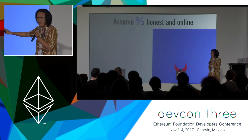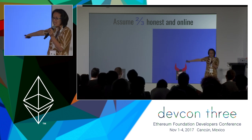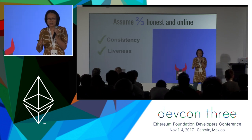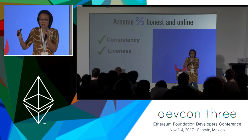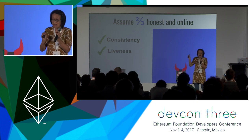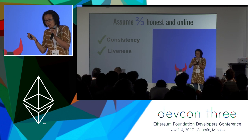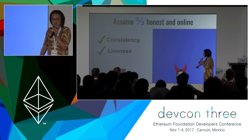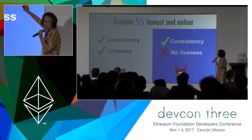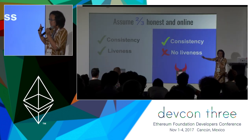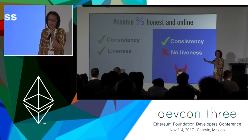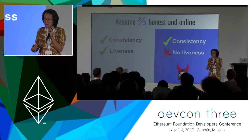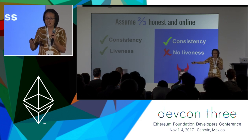Let's consider two possible worlds: on the left, Vitalik is honest; on the right, Vitalik is corrupt. When Vitalik is honest, everything is good — we have both consistency and liveness, because he proposes the same transaction to everyone and all honest nodes vote the same way, so soon enough 2f+1 votes are collected. On the other hand, if Vitalik is corrupt, we still have consistency, but we don't have liveness anymore. A corrupt Vitalik can propose different transactions to different people so everyone ends up voting for different things and you can never collect enough votes.